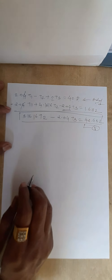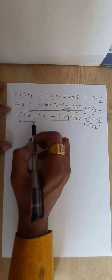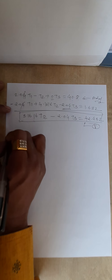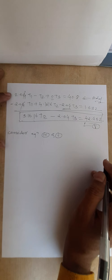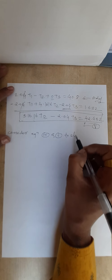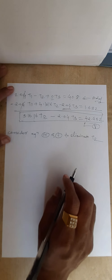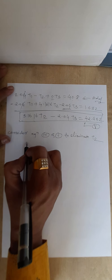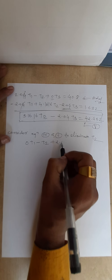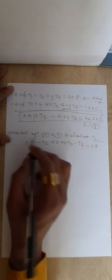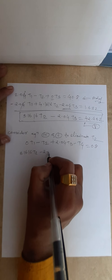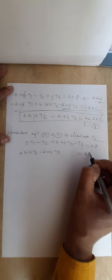Call this equation 5. The next step is to consider equations 3 and 5 to eliminate T2. Equation 3 is: 0·T1 minus T2 plus 2.04 T3 minus T4 equals 0.8, and equation 5 is: 3.1616 T2 minus 2.04 T3 equals 42.432.